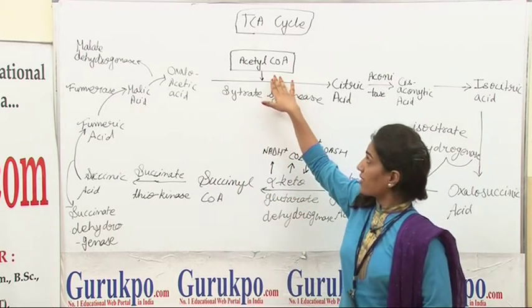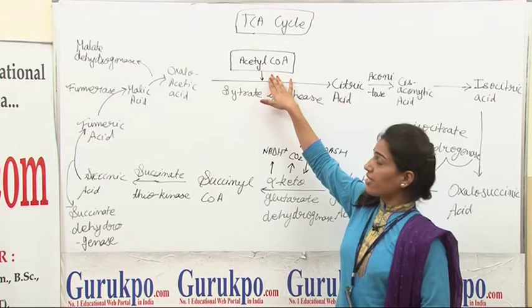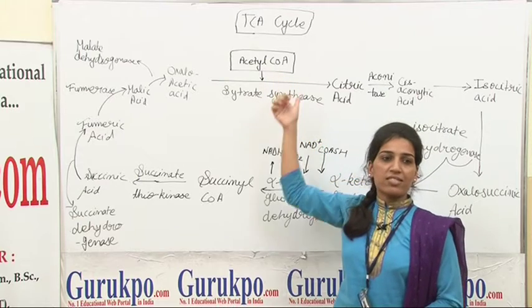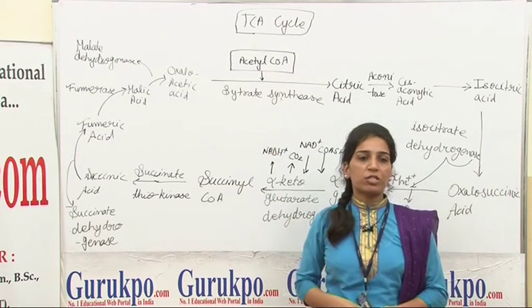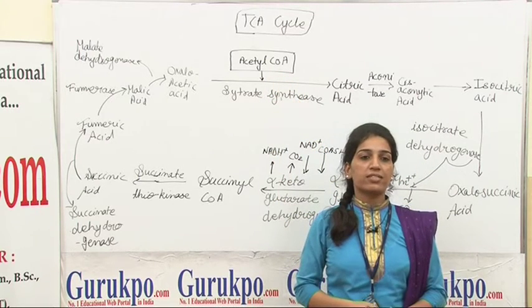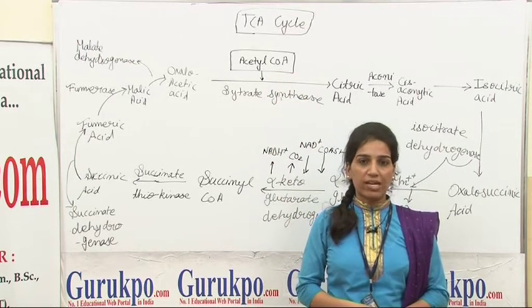This cycle is started by acetyl coenzyme A. This acetyl coenzyme A is produced by the cycle of glycolysis.